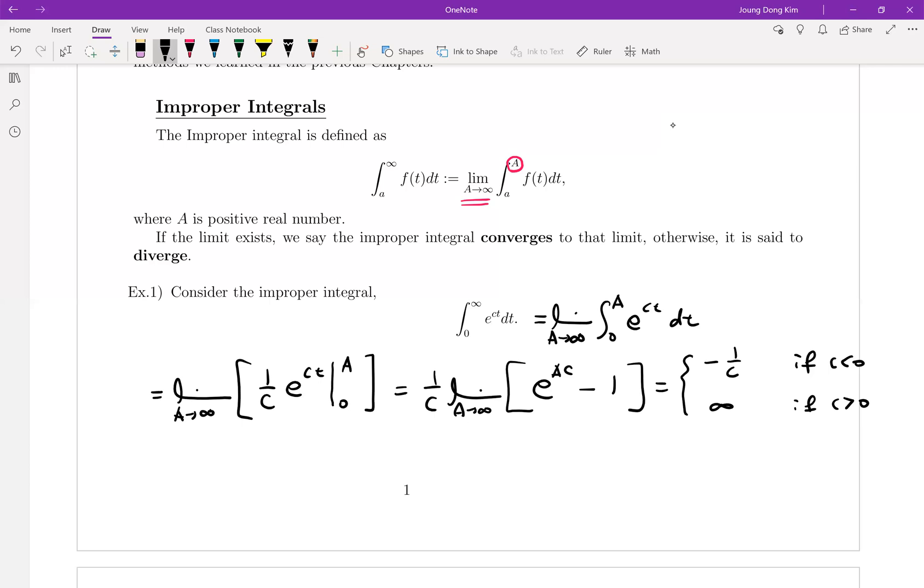But we didn't care about one another case which is the case c equal to zero, right? If your c equals zero then your improper integral will be zero to a, since your c is equal to zero and this part equals one. Which is equal to limit a goes to infinite, a minus zero which is infinite.